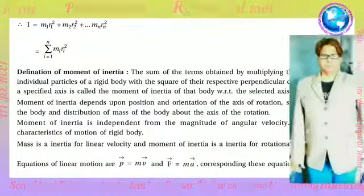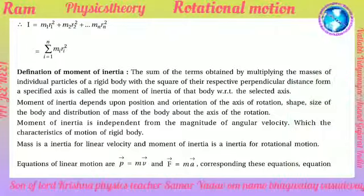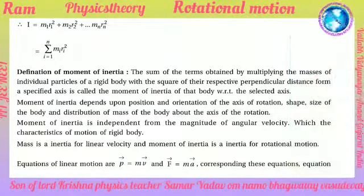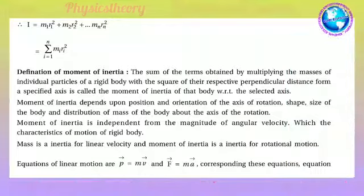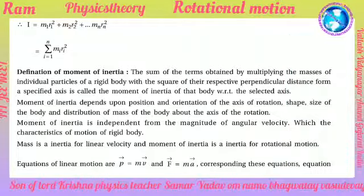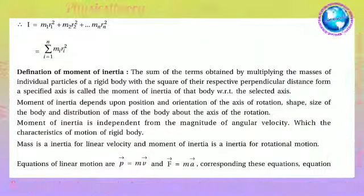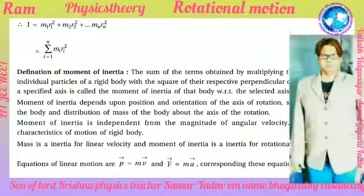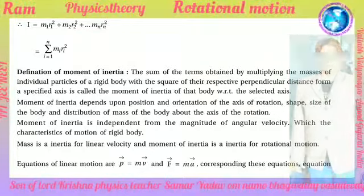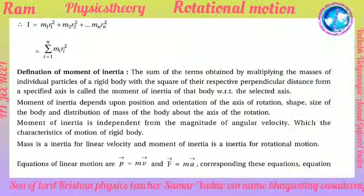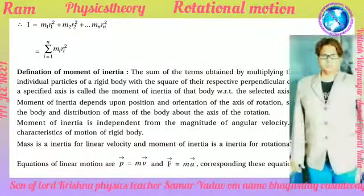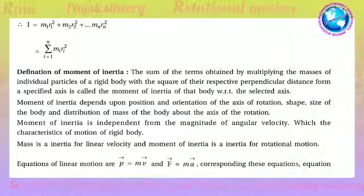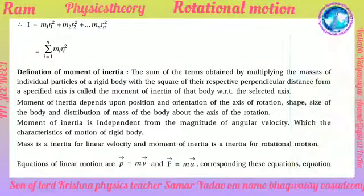Definition of moment of inertia: the sum of the terms obtained by multiplying the masses of the individual particles of a rigid body with the square of their respective perpendicular distances from the specified axis is called the moment of inertia of a body with respect to the selected axis.